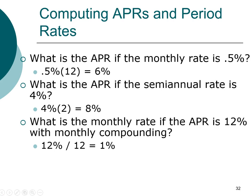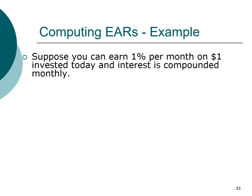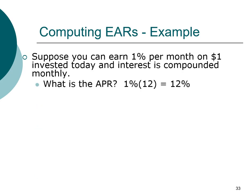The best way to understand effective annual rate is through an example. Let's say you have an investment that will pay you 1% per month on a dollar that you invest today, and interest is compounded on a monthly basis. First, let's check what the APR would be: if it's 1% per month, then on a per-year basis, 12 months per year gives us 12% per year. If you are able to earn 1% per month, how much would that $1 invested today grow to at the end of the year? We invested $1 and earn 1% per month.